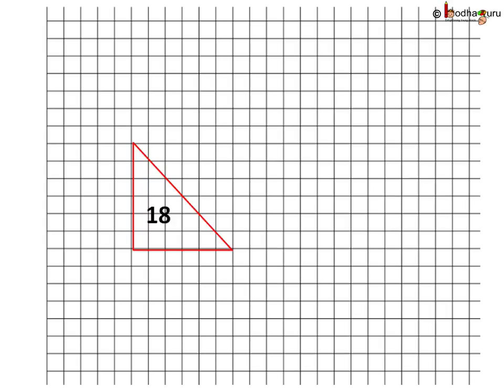So what is the area of this triangle? We have to count the number of small squares it covers, but it covers some squares half only. Two halves make one square, so if you count, it exactly covers 18 small squares. So the area of this triangle is 18 squares.